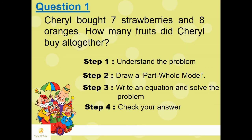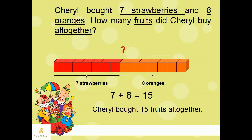Here is question 1. Cheryl bought 7 strawberries and 8 oranges. How many fruits did Cheryl buy altogether? Using multilink cubes, ask the students: How many cubes can we use to show the strawberries? How many cubes to show the oranges? What do we want to find out? Join the cubes together to find the total, and count the number of cubes altogether.